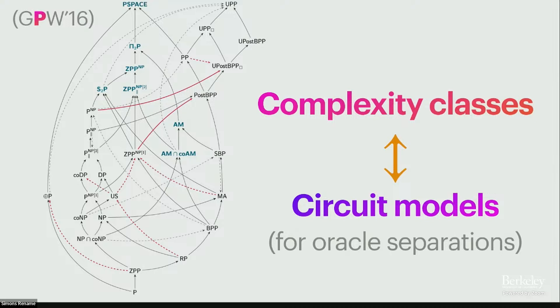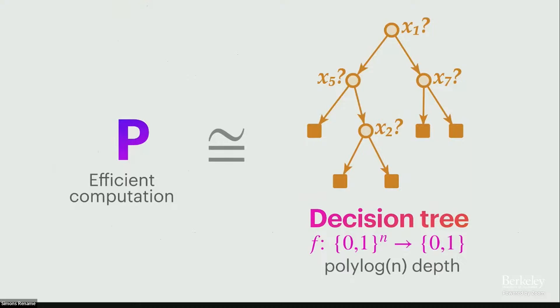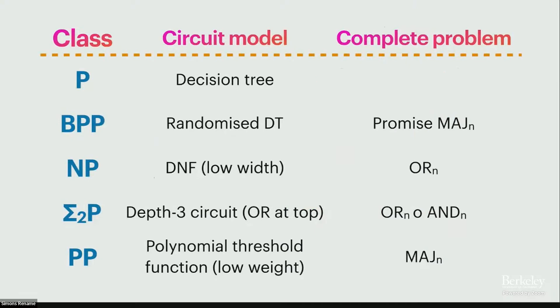So let me explain this correspondence between Turing machine classes and query analogs. Maybe the simplest correspondence is just: P stands for polynomial time, compute efficiently. In the land of query complexity and circuits, we take this to mean shallow decision trees. So an n-bit Boolean function is efficiently computable deterministically if there's a polylog(n) depth decision tree for it. So that's like the first correspondence. You can do it for any class you choose to pick. Maybe BPP gives you randomized decision trees. NP corresponds to low-width DNF, so if you have a Boolean function that admits a low-width DNF, the yes inputs admit short certificates.